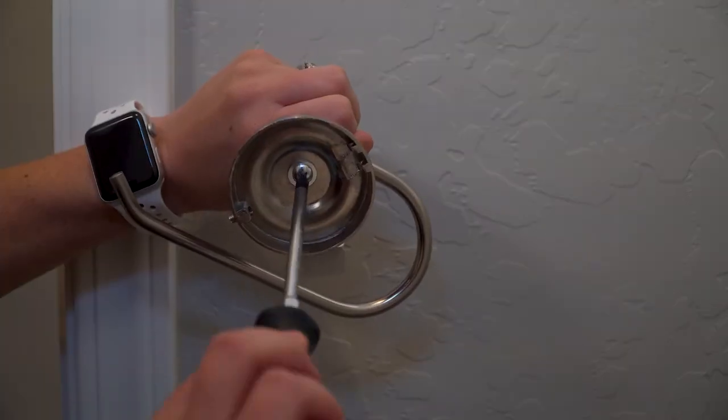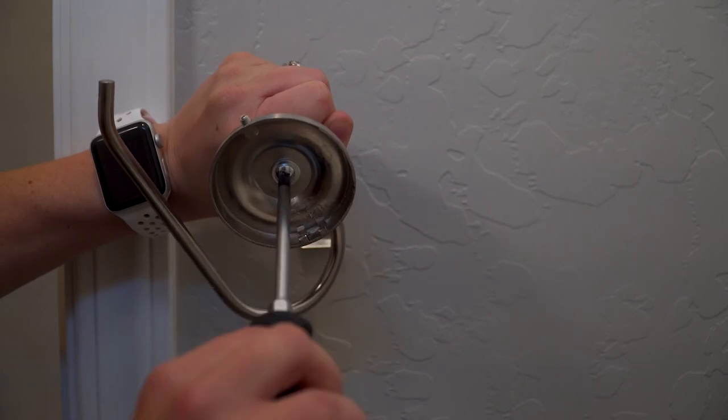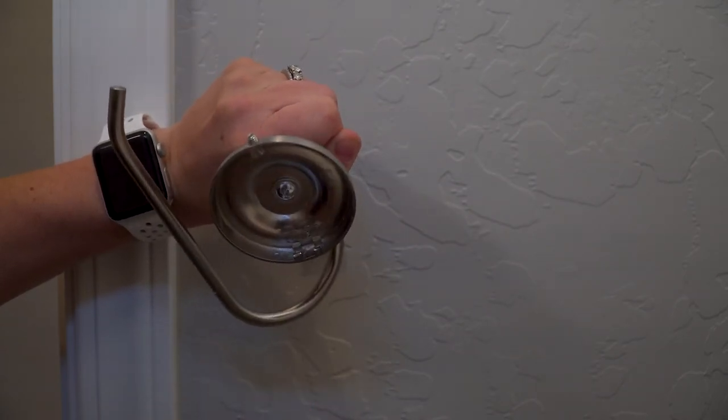Behind the round plate of the holder you'll find a Phillips screw. Simply tighten the screw by turning clockwise until you feel resistance.